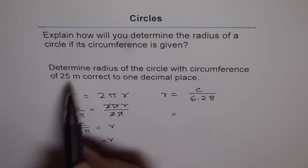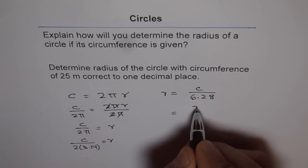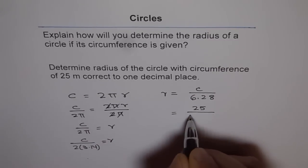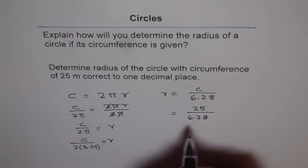So we know circumference is 25 meters. Let's put 25 here. 25 divided by 6.28. And we'll get what?